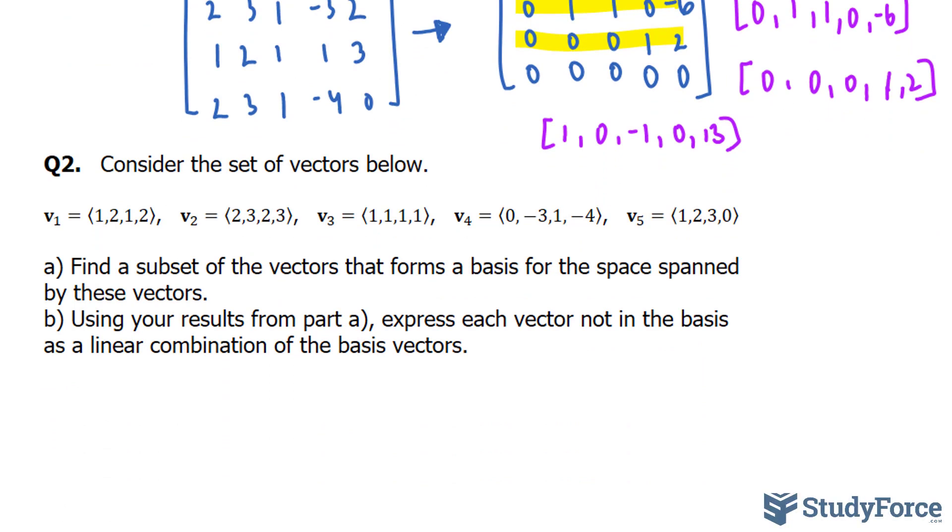In question number 2, we're asked, consider the set of vectors below, 1 through 5. Find a subset of the vectors that form a basis for the space spanned by these vectors. And B, using your results from part A, express each vector not in the basis as a linear combination of the basis vectors.